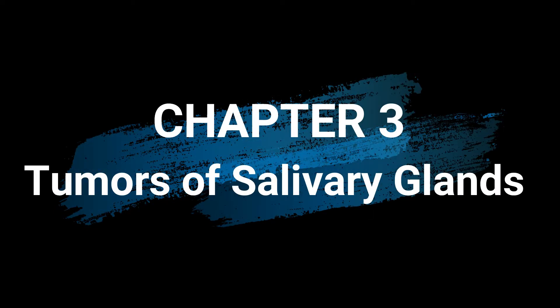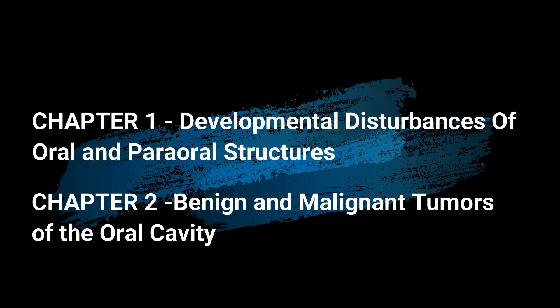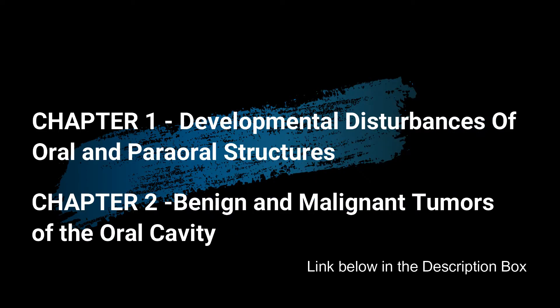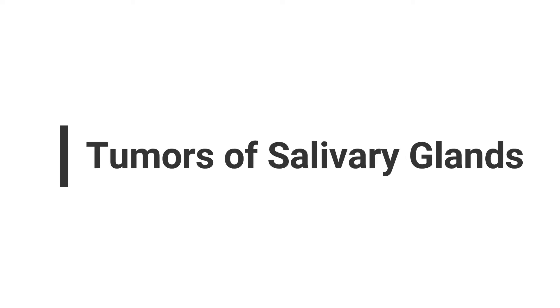I have already covered important topics from two chapters previously: developmental disturbances of oral and paraoral structures, and benign and malignant tumors of oral cavity. You can check them as well — I am mentioning the link below in the description box as well as on screen. So now let's get started with today's topic: tumors of salivary glands.